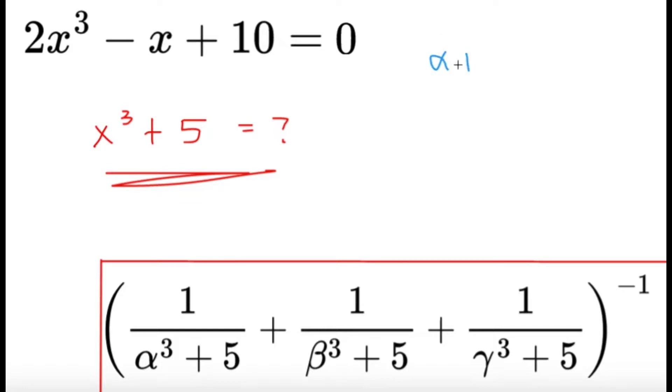So we know what we can get from Vieta's: the sum of the roots, we know what this is. And we know what this is, the sum of the product taken two at a time, the sum of the roots taken two at a time.